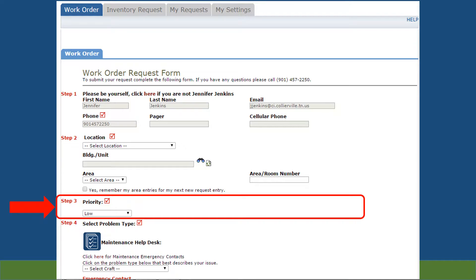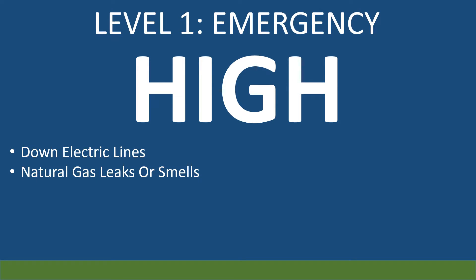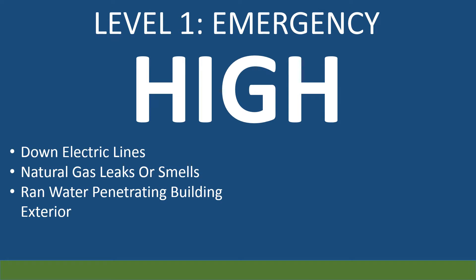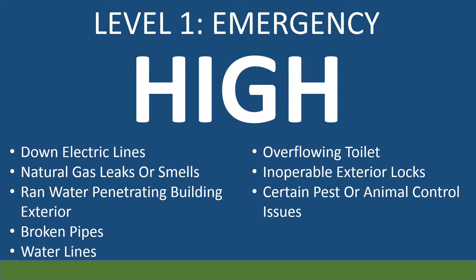Step 3, Priority: this is the priority of the request. What once was level 1 emergency is now level High. Use this priority for emergency service requiring an immediate initial response to prevent escalation of the problem or damages, or conditions affecting the safety or health of persons or property. Examples include, but are not limited to: downed electric lines, natural gas leaks or smells, rain water penetrating building exterior, broken pipes, water lines, overflowing toilet, inoperable exterior locks, certain pest or animal control issues, and fire alarm sounding. The response time on high priority work orders will be within 60 minutes or less.